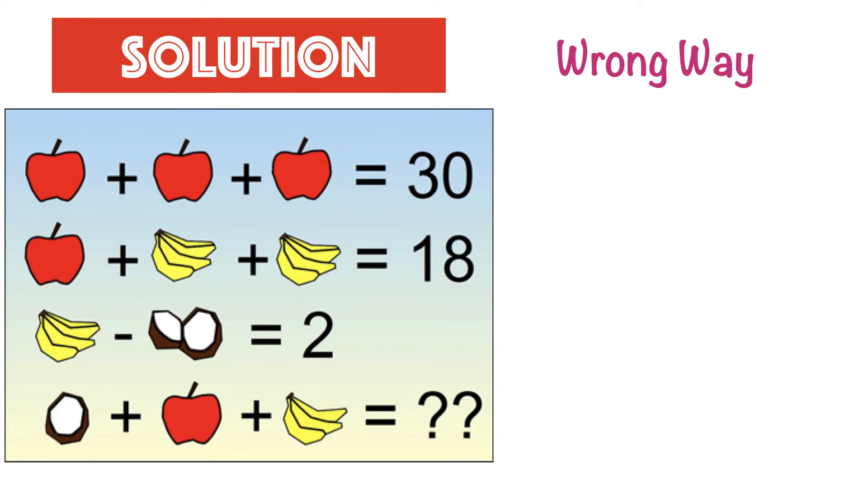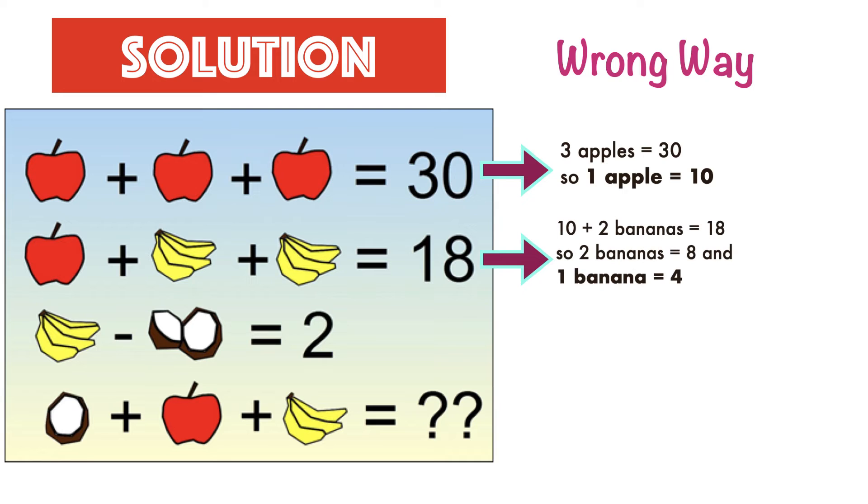The answer is on the surface not terribly difficult to find. In the first equation, three apples equals 30, so one apple equals 10. In the second equation, 10 plus 2 bananas equals 18, so 2 bananas equals 8 and 1 banana equals 4.